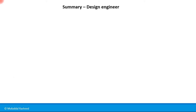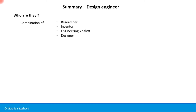To summarize what design engineering is and how it impacts the world: design engineering is a combination of four professions — research, invention, engineering analysis, and design. The design engineer performs some of each: research, innovation or invention, engineering analysis, and design work. It is a combination of all four roles.